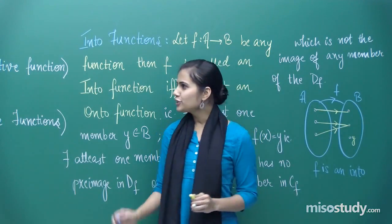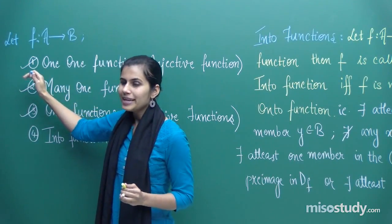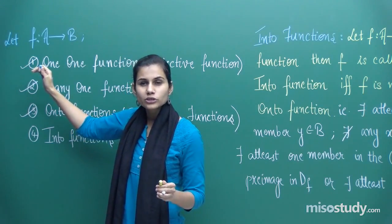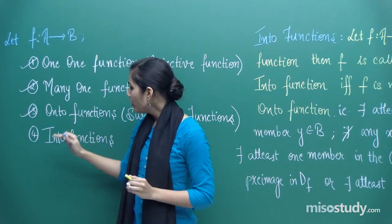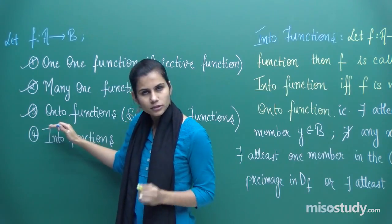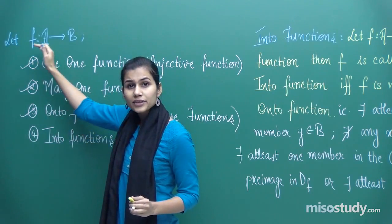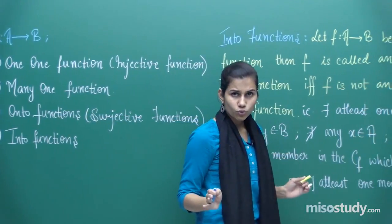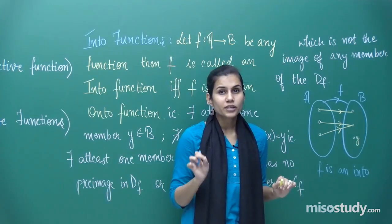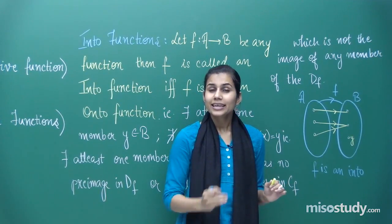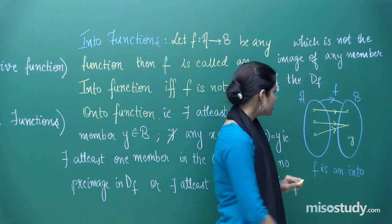What else is F? Each function possesses one quality from the domain side — either one-one or many-one. We declared F to be into based on the co-domain behavior. Now, is it one-one or many-one? That is decided by the behavior of the domain members. If distinct members of the domain get mapped to distinct members of the co-domain, F is one-one — but that is not the case here because two members of set A mapped to the same element.